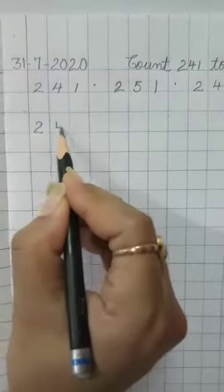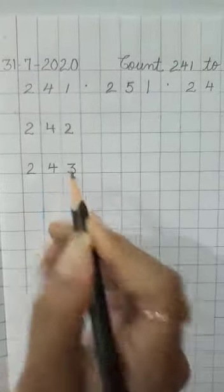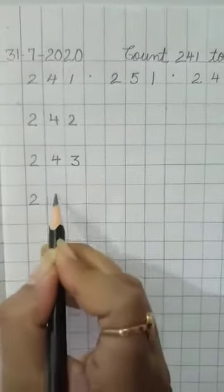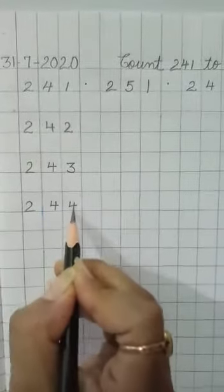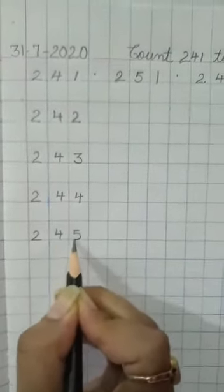Our next number is 242, then 243, after we write 244, now 245.